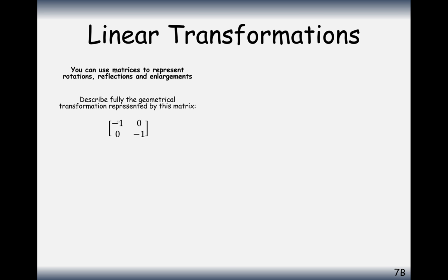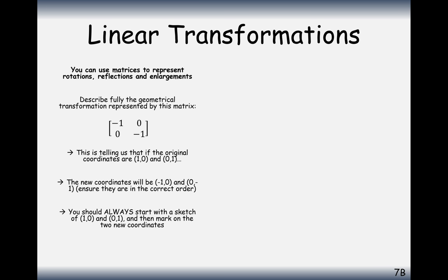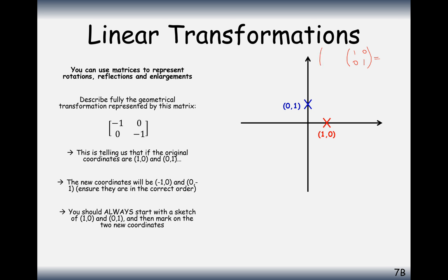Let's have a look at another matrix: (-1, 0, 0, -1). How can we tell what that matrix does? As before, always start with our identity base matrix (1, 0, 0, 1). We apply the transformation matrix (-1, 0, 0, -1) to this set of coordinates, and obviously when we times anything by the identity we get that matrix again. So now this is the matrix of image coordinates. Let's plot them on a diagram and see how these two coordinates have moved.